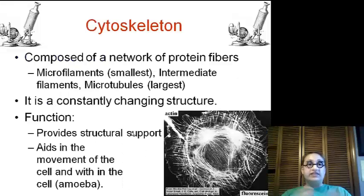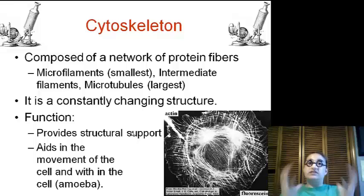Next, we have the cytoskeleton. It is composed of a network of protein fibers. These protein fibers are typically about three of them. They go from the smallest to the largest, with microfilaments, intermediate filaments, and microtubules, which are the largest. They are constantly changing positions to help maintain the structure and shape of the cell. The function is to provide structural support and it aids in movement of the cell and within the cell.